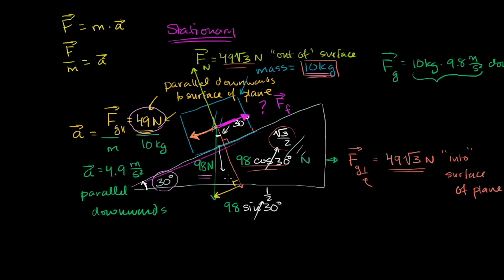The force of friction will always act in a direction opposite to the potential acceleration if there were no friction. So what is the force of friction in this case? Well, if this block is completely stationary and not accelerating down the ramp, the force of friction is going to be 49 newtons directed upwards — up the ramp. 49 newtons up the ramp.